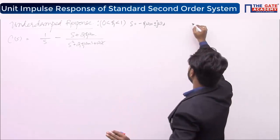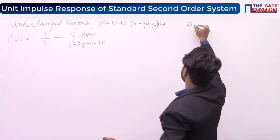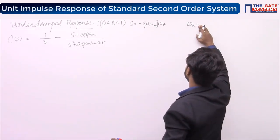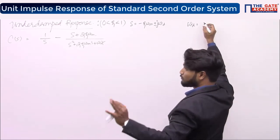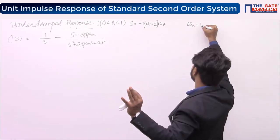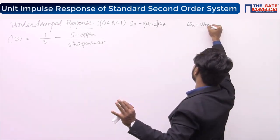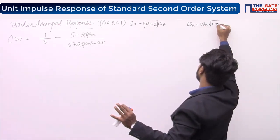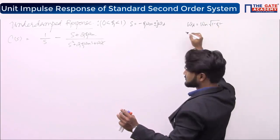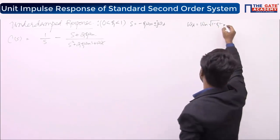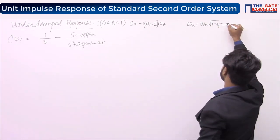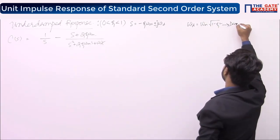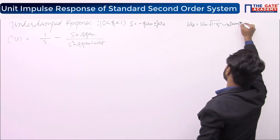Please always remember this formula: ωd = ωn·√(1 − ζ²). This is called the damped frequency of oscillations. You are going to use it very widely.